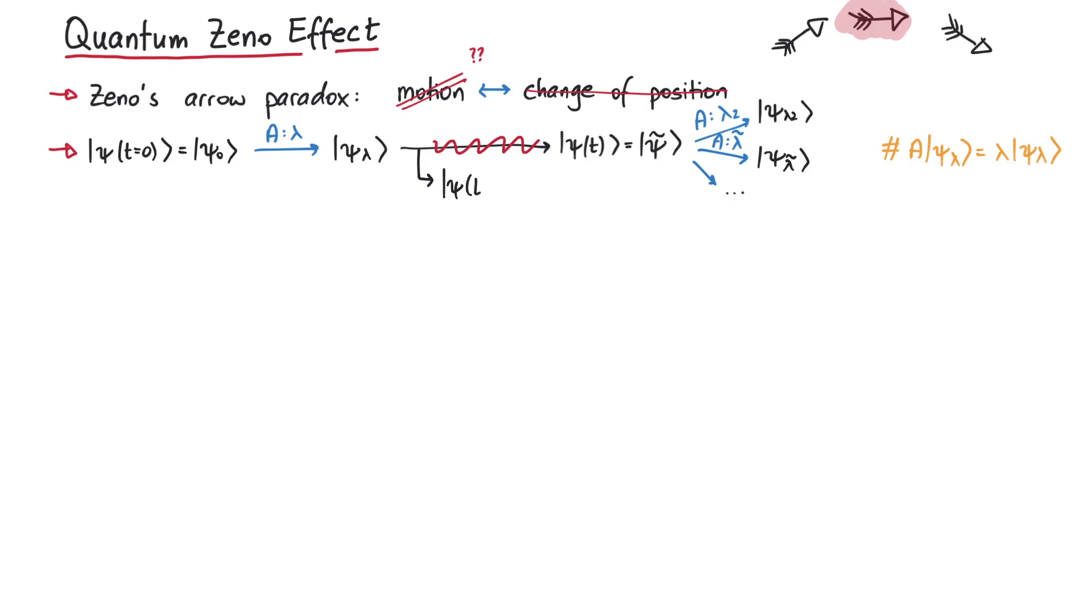Instead, we perform another measurement at time t equals epsilon with the same operator a, such that even if the wave function evolved a tiny bit, it will probably collapse to psi lambda again. This means we can effectively freeze the quantum system in this state.